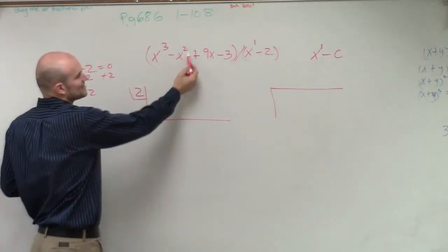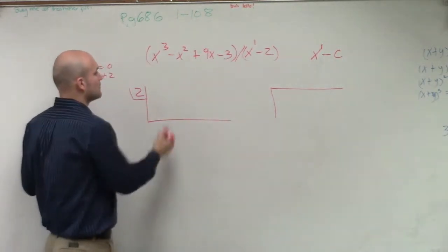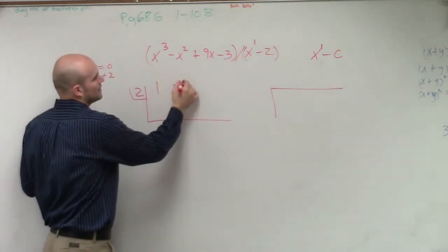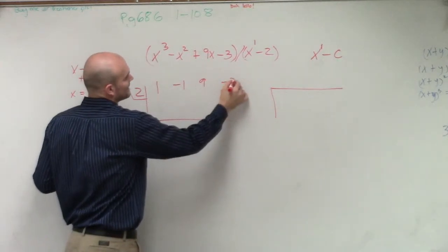So we have x cubed, x squared, x, and then negative 3. So now what we're going to do is write the coefficients. 1, negative 1, 9, and negative 3.